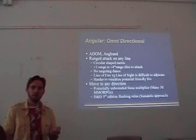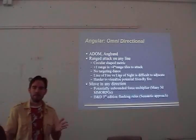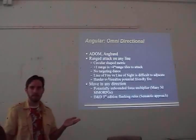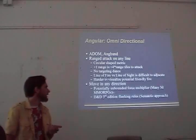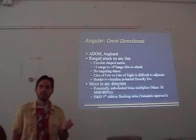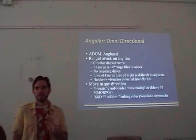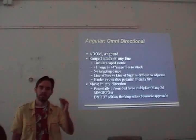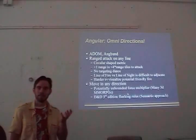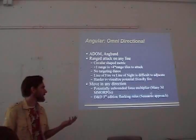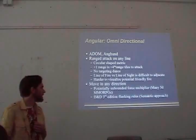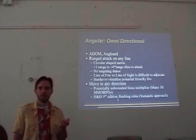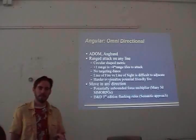The other approach of omnidirectional is allowing movement in any direction, which doesn't make much sense in a tile-based game but makes sense in a pixel-level or vector-type approach. One concern is this might result in an unbounded force multiplier where people can surround you at every point of the circle, especially if there's no collision detection between creatures, as we can see in many 3D games. Dungeons & Dragons 3rd edition has some flanking rules — a semantic solution where they say, given a sized enemy, how many people of a different size can surround it, explicitly determining the force multiplier.